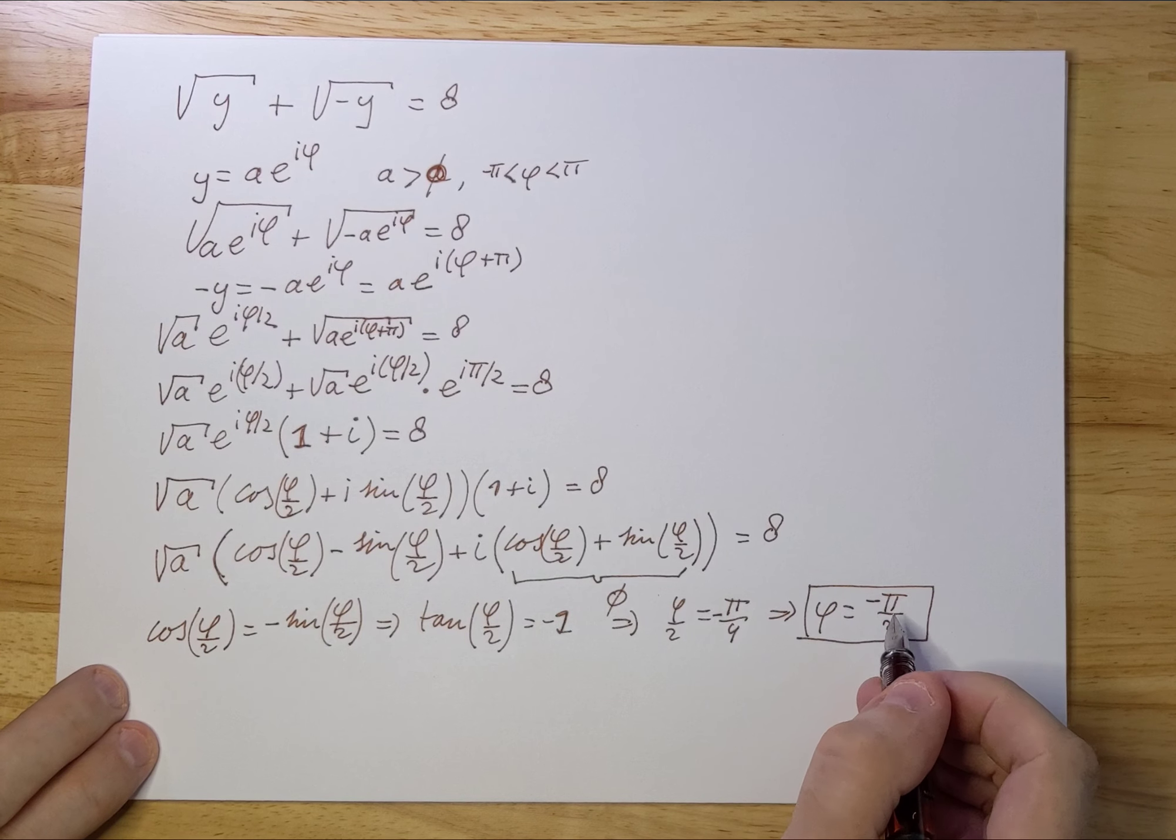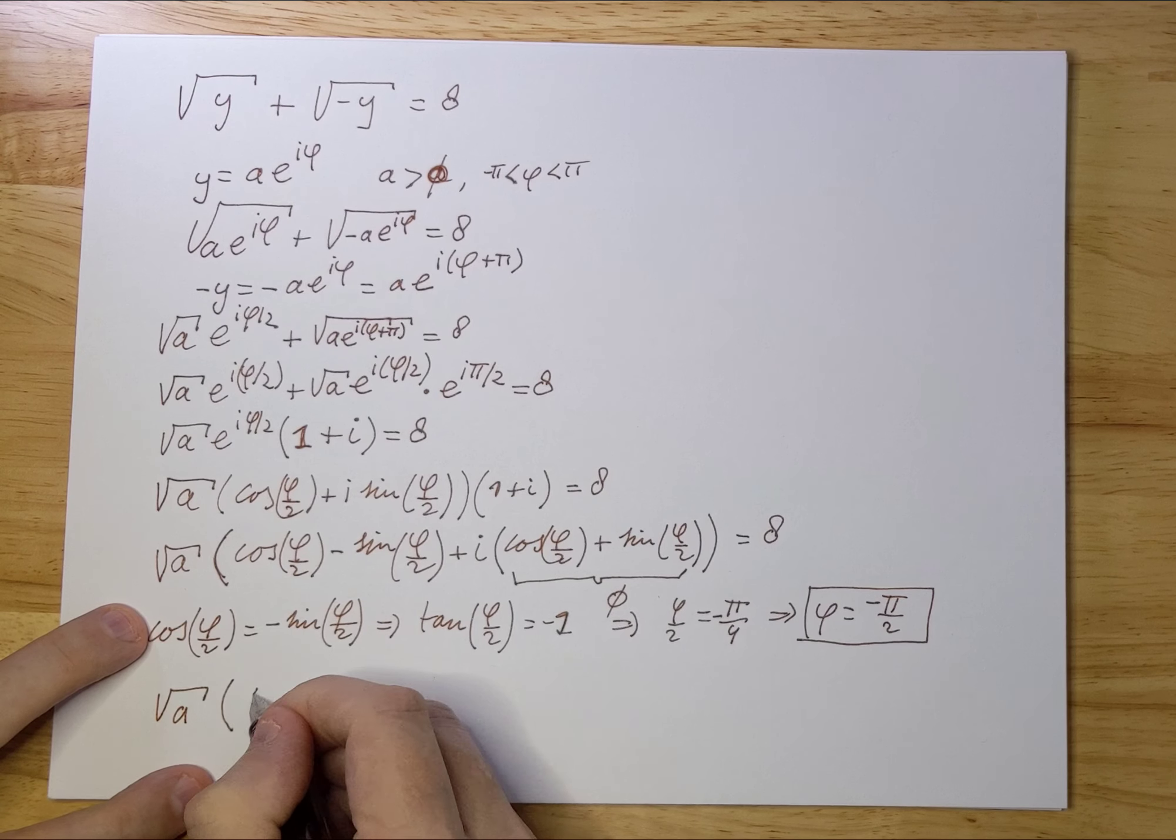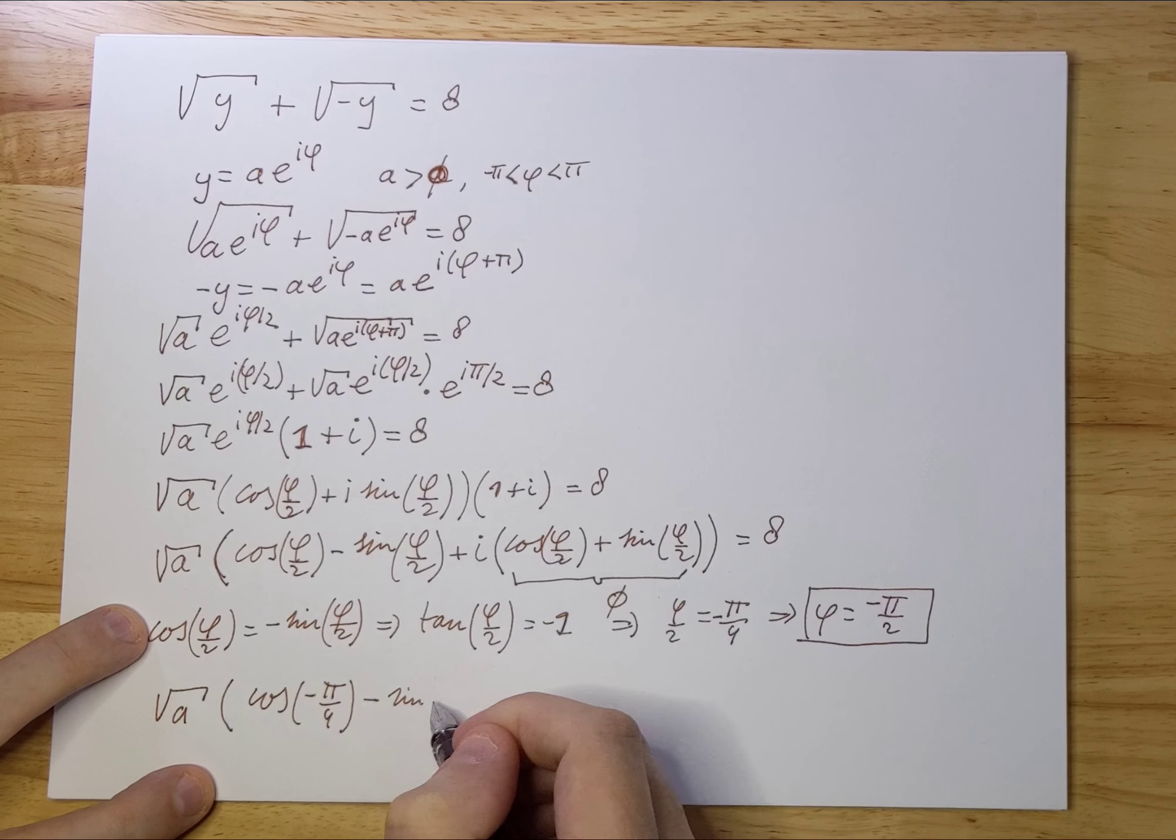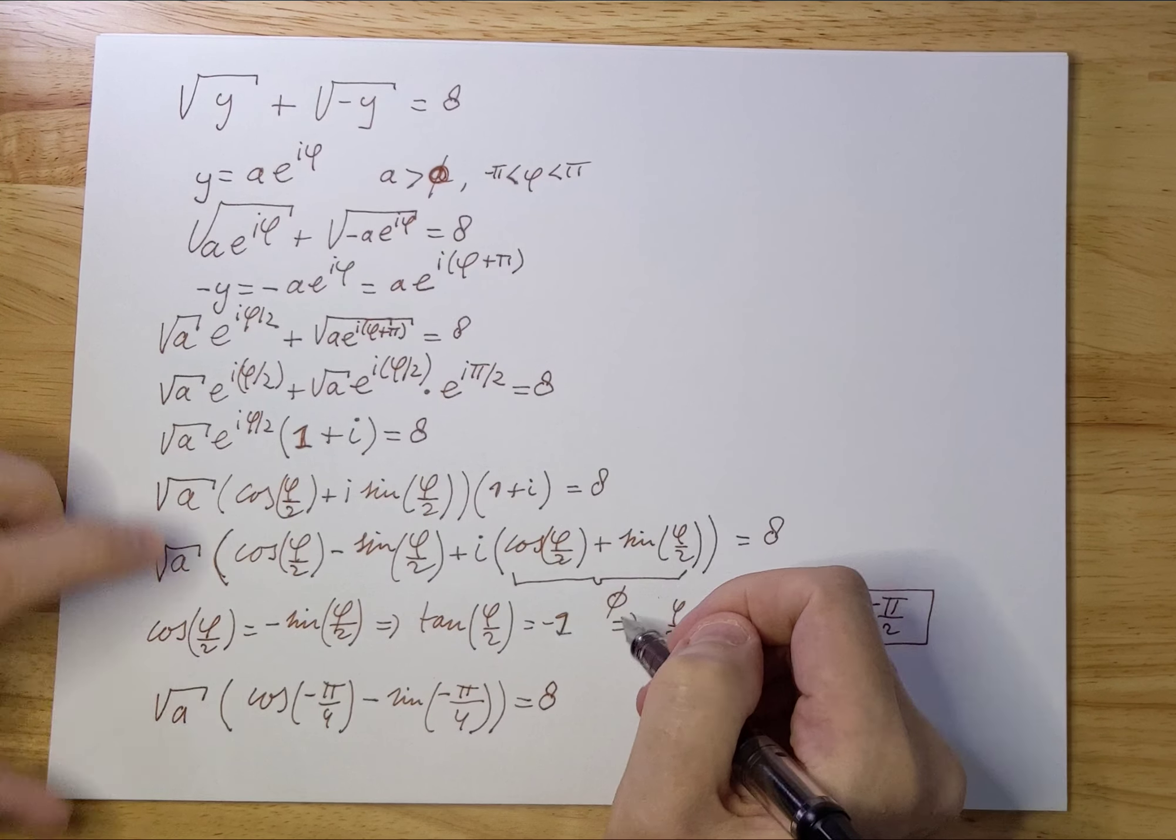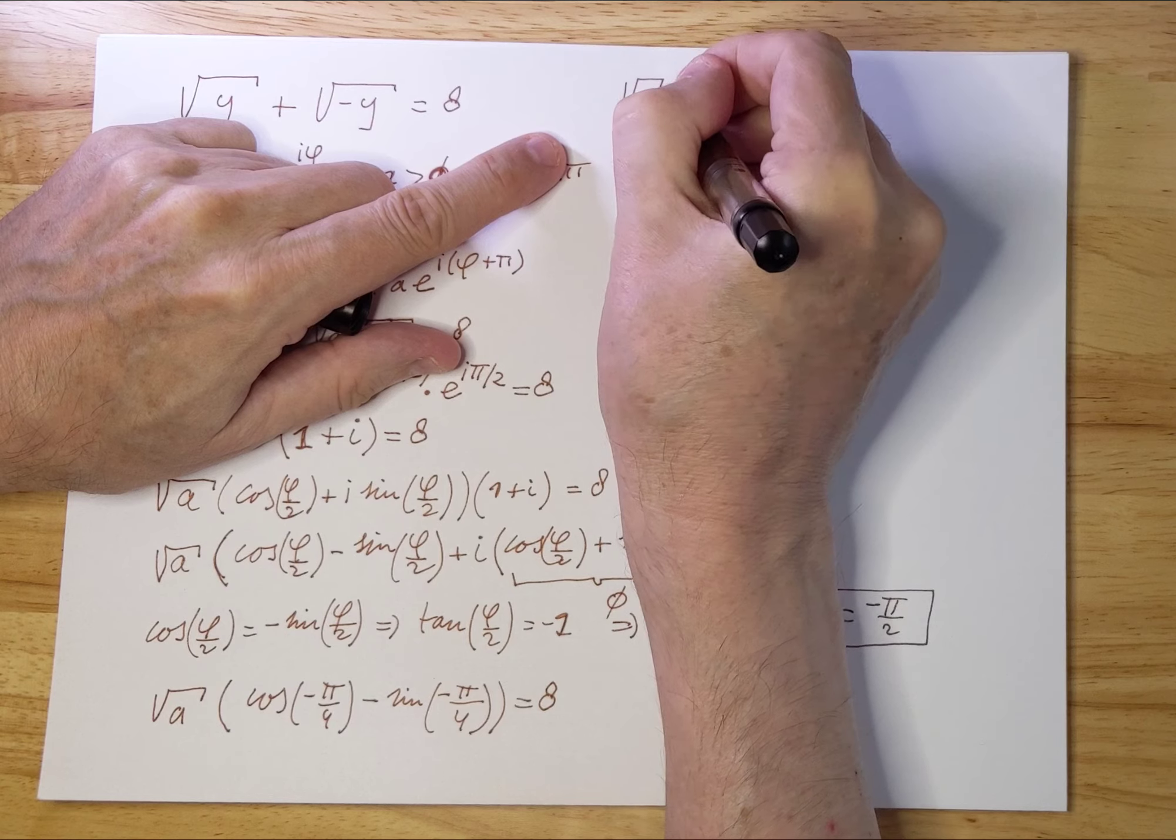Let's fill this value out in the first part. So we get √a times (cos(-π/4) - sin(-π/4)) = 8. We can work that out.